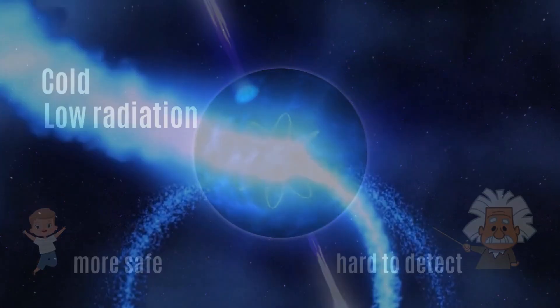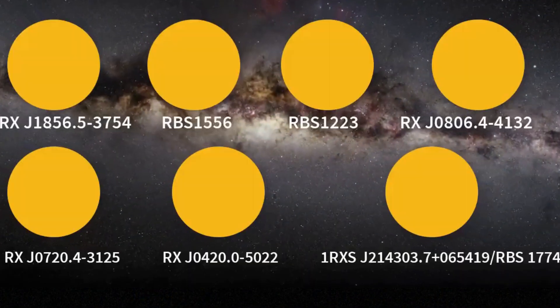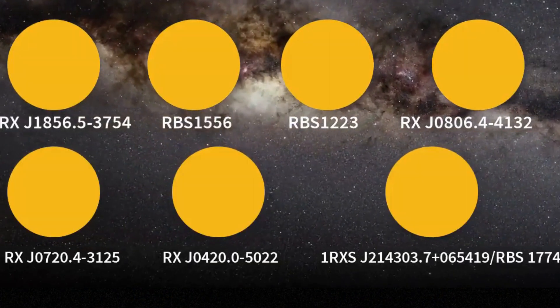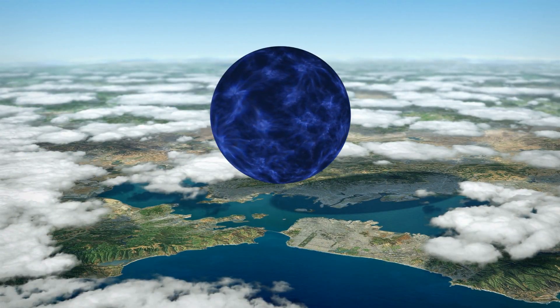The nearest known neutron star to Earth resides approximately 400 light-years away and is part of a group known as the Magnificent Seven, comprising seven neighboring neutron stars, a fact that is impossible to comprehend.